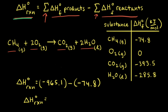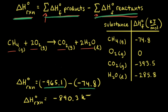To find the standard change in enthalpy for our reaction, we take the sum of the enthalpies of formation of our products, which was negative 965.1 kilojoules, and subtract the sum of the standard enthalpies of formation of the reactants, which was negative 74.8 kilojoules. So negative 965.1 minus negative 74.8 equals negative 890.3 kilojoules. For units, you may see kilojoules, kilojoules per mole, or kilojoules per mole of reaction — meaning combusting one mole of methane as written in this balanced equation releases 890.3 kilojoules of energy.